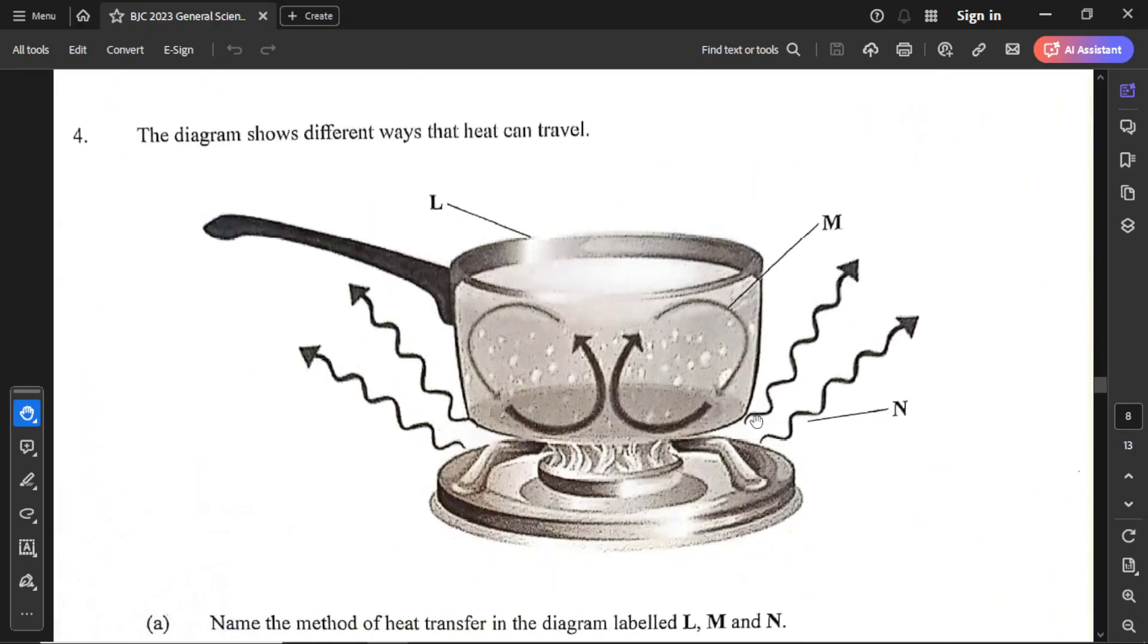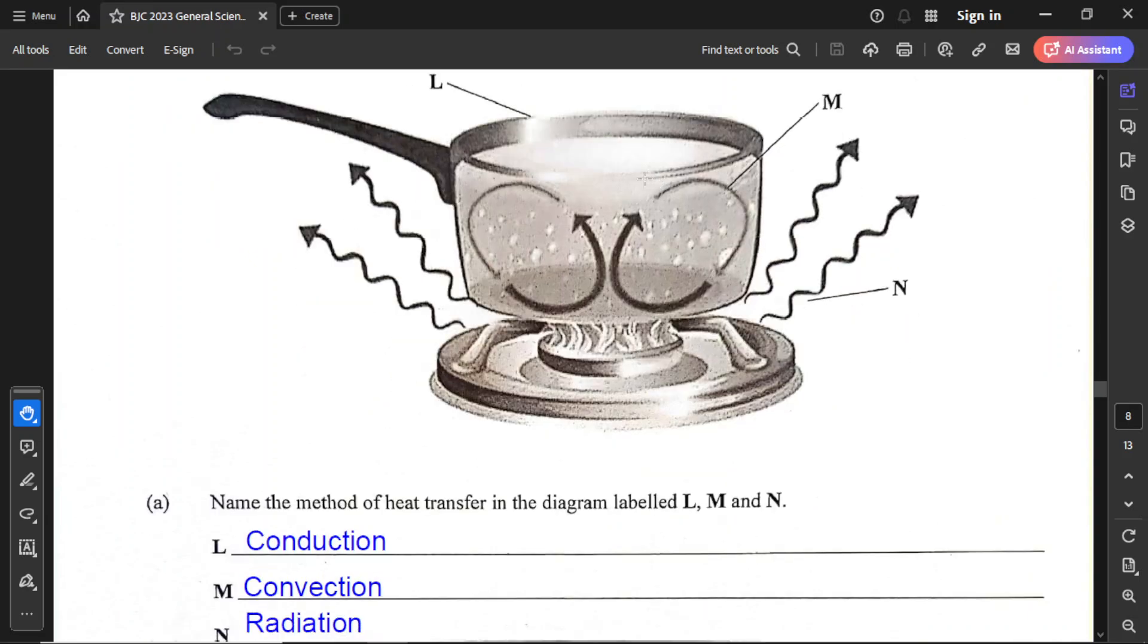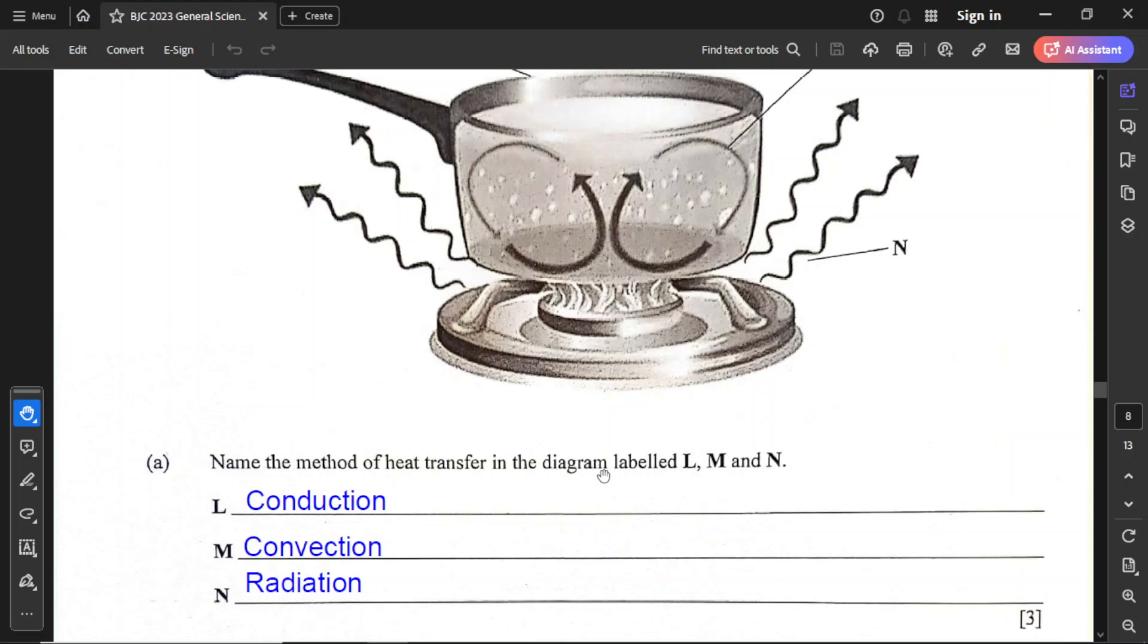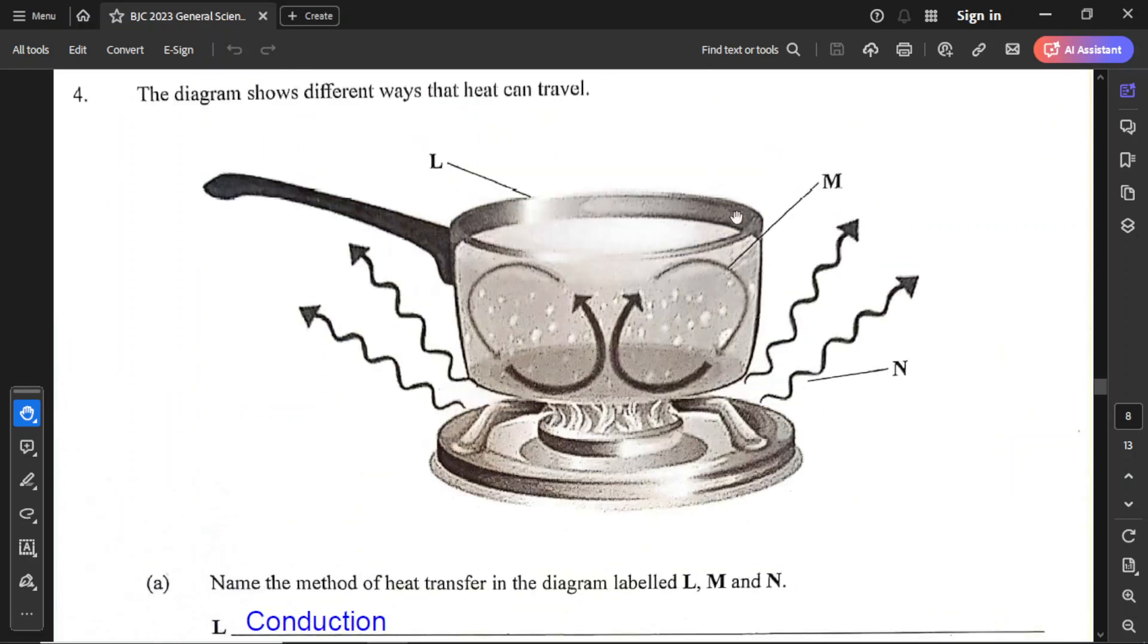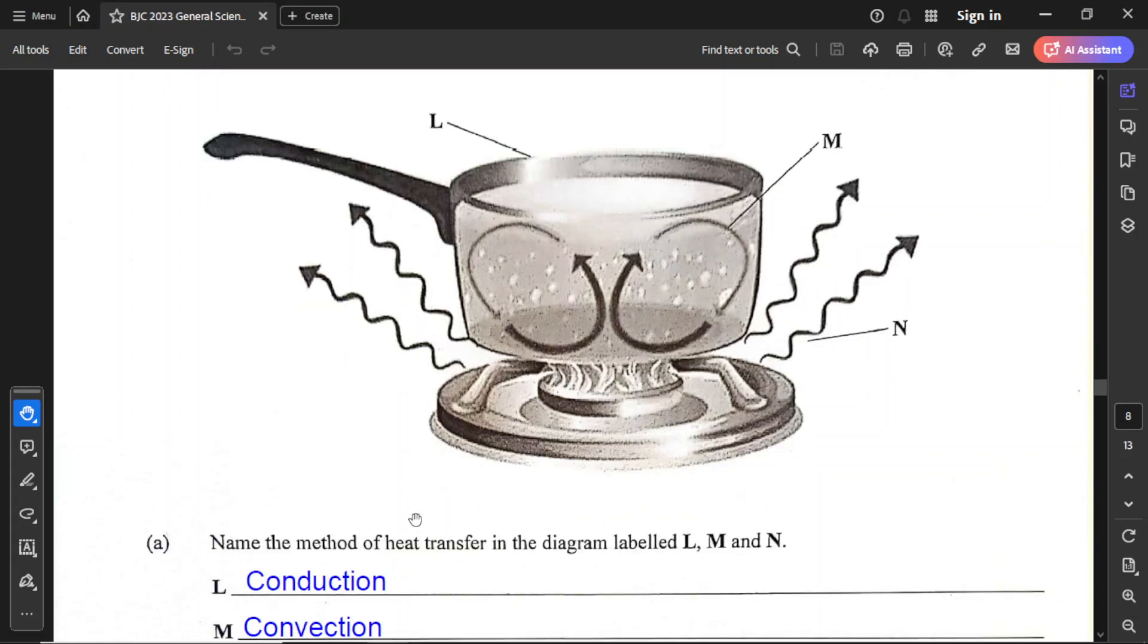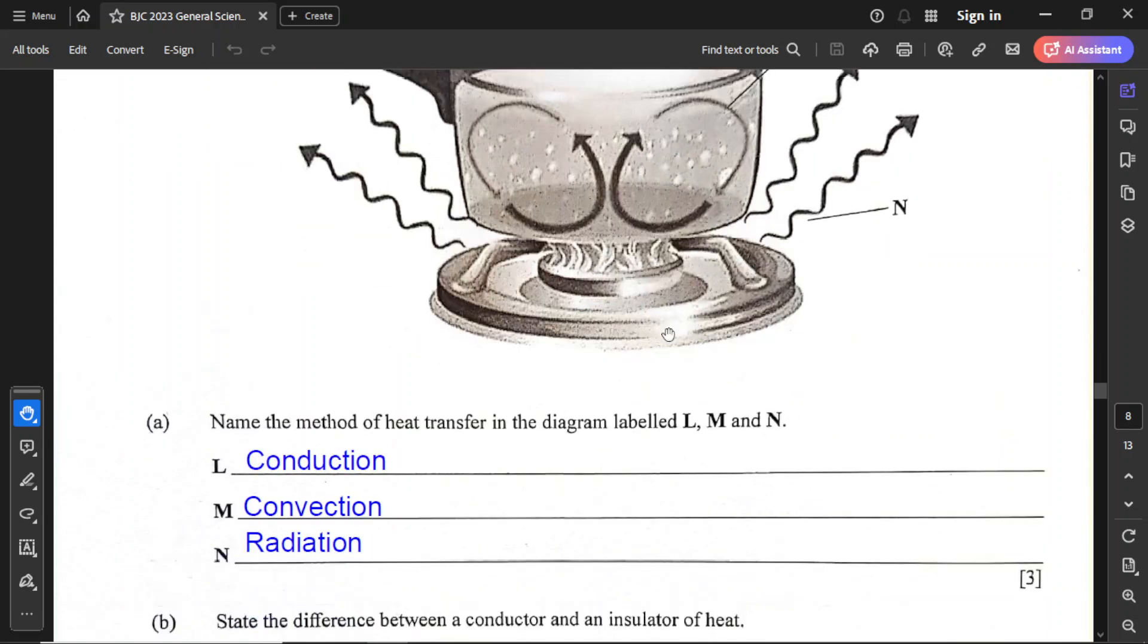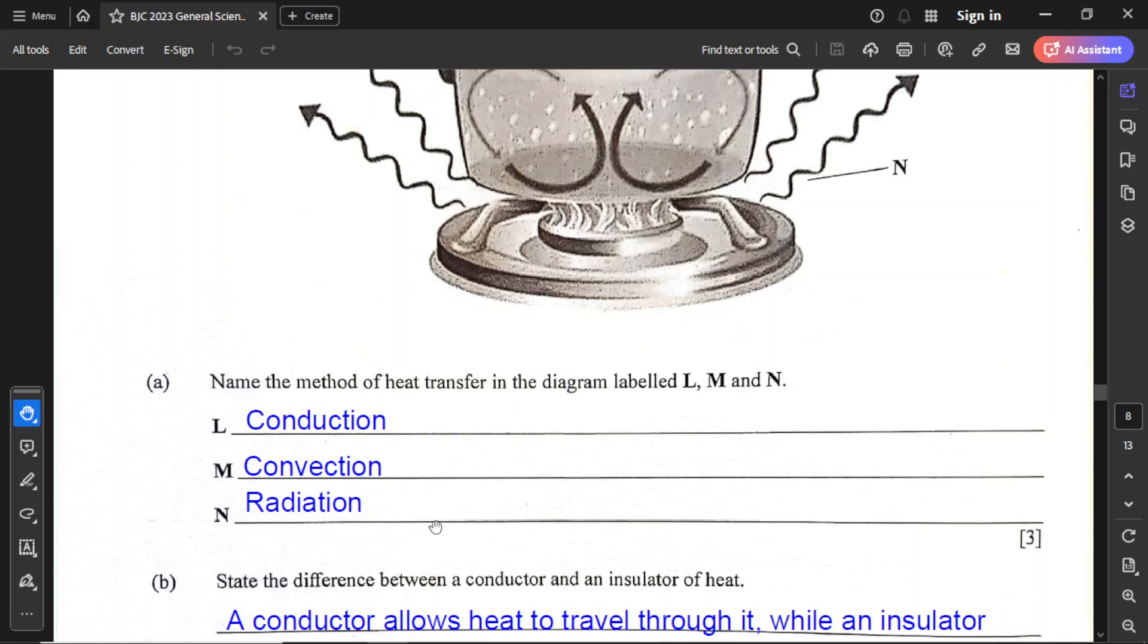Question number four. The diagram shows different ways that heat can travel. Name the method of heat transfer in the diagram labeled L, M, and N. L is pointing to the pot itself, which is the metallic part of the pot, and so that is conduction. M points to these lines, the arrows going up and down, which mean the movements of the water bubbles, and that will be convection. And N is radiation.